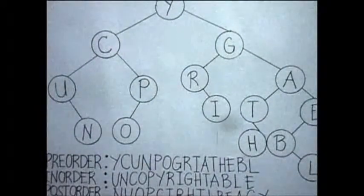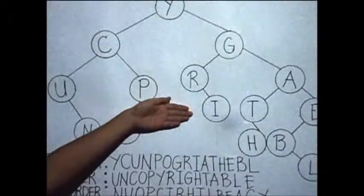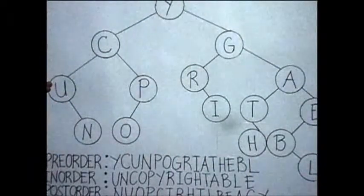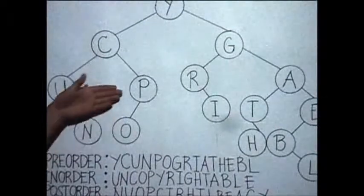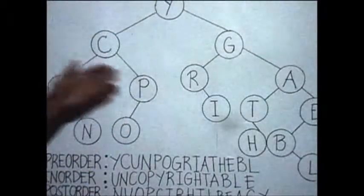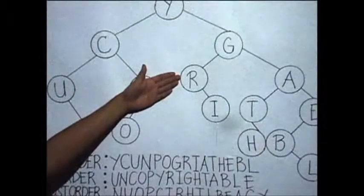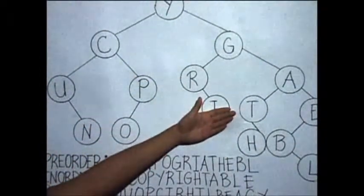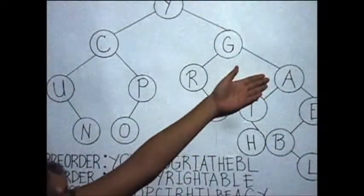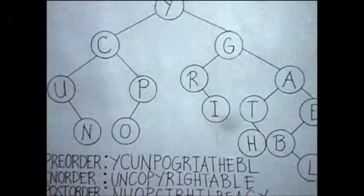For the post-order traversal, the order is left child, right child, root node. We first visit its left sub-tree, then visit its right sub-tree, and then finally we visit the root node. We start at letter N, followed by the left child letter U, then go to the right child letter O, next is letter P, then go to letter C. We finish visiting all the nodes in the left sub-tree, and now let's go to the nodes in the right sub-tree. We first go to the right child letter I, then to the left child letter R, next is letter H, followed by letter T, then go to letter L, next is letter B, followed by letter E, then to node letter A, followed by node letter G, and lastly to the root node letter Y.